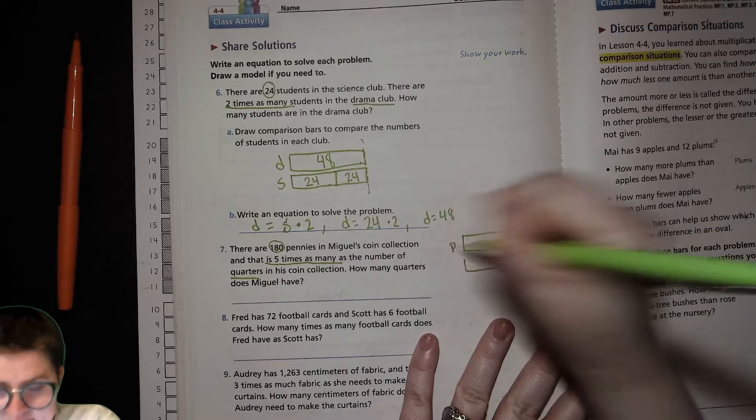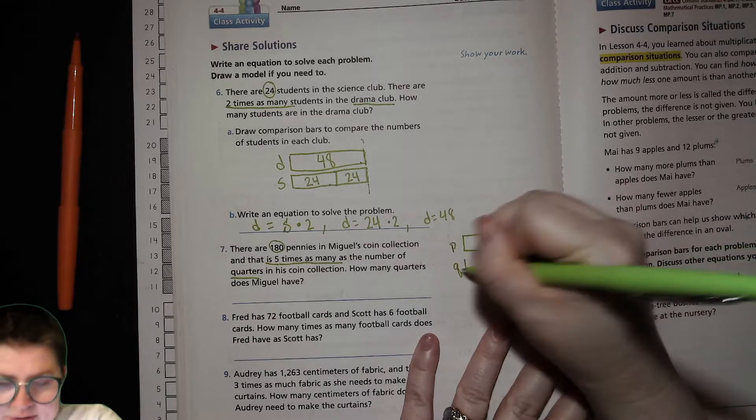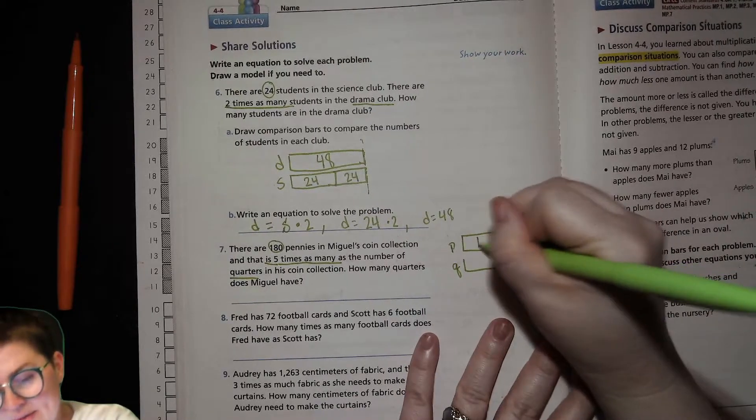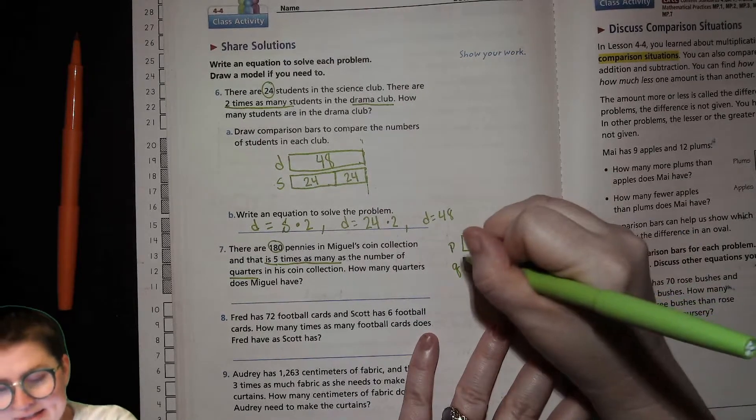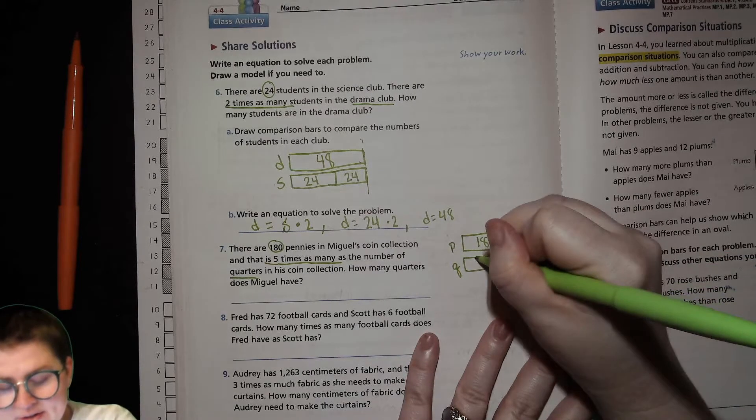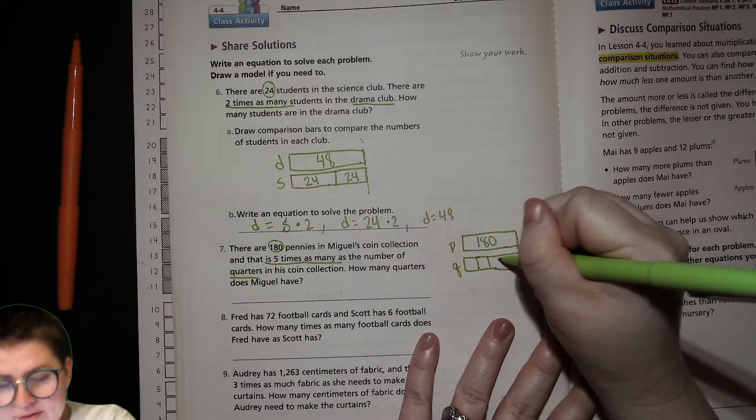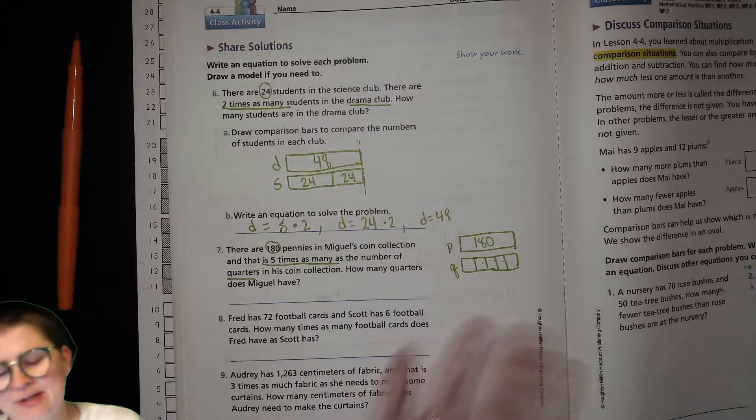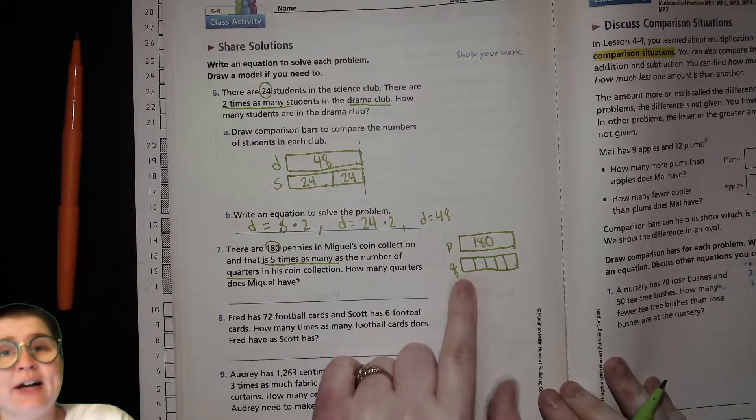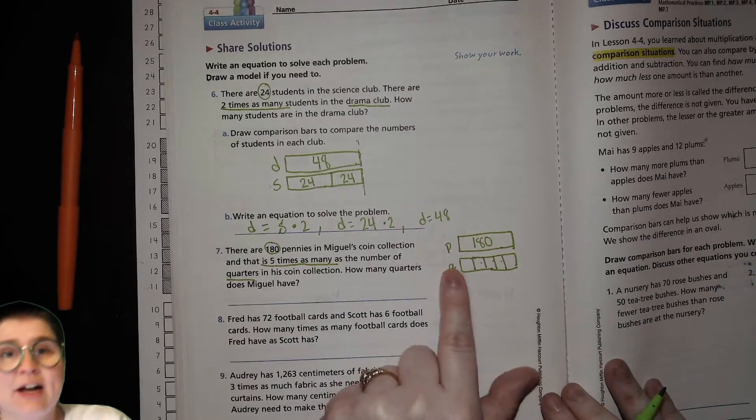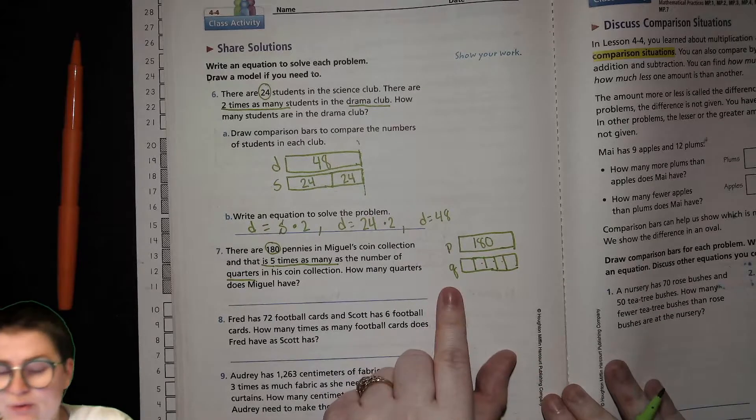So that 180 is five times. We're going to have to make this and make it like fifths. Two, three, one, two, three, four, five. So whatever this amount is, five times is the 180. Or 180 divided by five is whatever the quarter amount is.